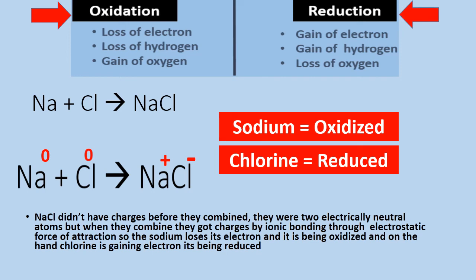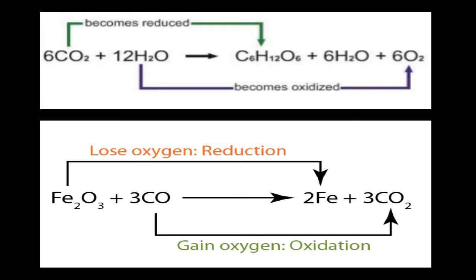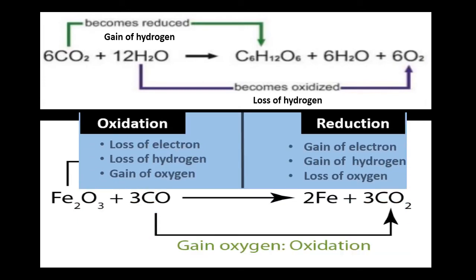We can also see this in the photosynthesis reaction. Carbon dioxide gains hydrogen to form glucose — this is the reduction of carbon dioxide. On the other side, water molecules lose hydrogen — loss of hydrogen means oxidation — so water molecules are oxidized.